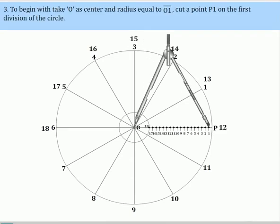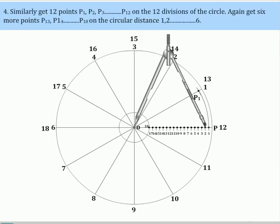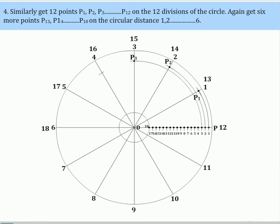To begin with, take O as center and radius equal to O1. Cut a point P1 on the first division of the circle. Similarly, get 12 points P1, P2, P3 and so on up to P12 on the 12 divisions of the circle.